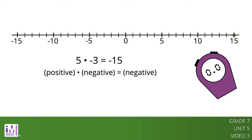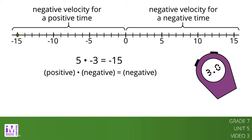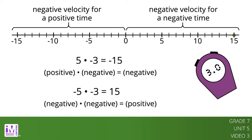On the other hand, suppose you are moving in a negative direction. You still cross position zero right as the timer starts. For times after this reference time, you will have a negative position. But for times that were before the reference time, you must have had a positive position. For example, with a velocity of negative 5 meters per second, then 3 seconds before the timer started, you were at position positive 15. In other words, negative 5 times negative 3 equals positive 15. This shows that a negative times a negative equals a positive.